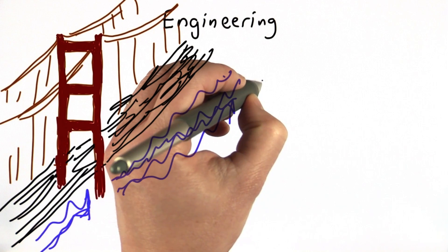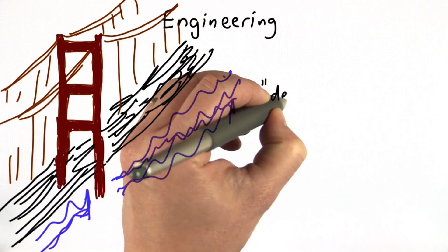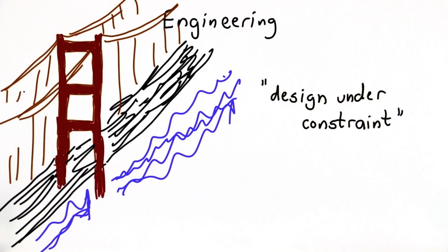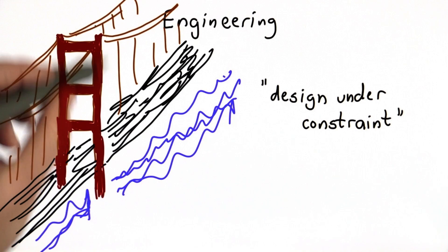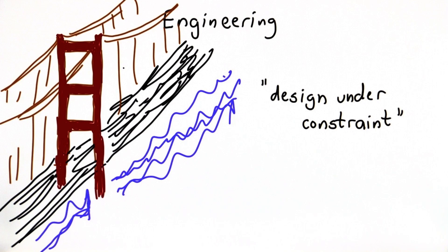A broader view of engineering views it as design under constraint. When you're building a bridge, the constraints are the laws of physics. You need the bridge to stand up, but you want to limit the cost of the bridge, the amount of material that you use. You want it to not sway too much in the wind. These are all the kinds of constraints that you have to think about in designing a bridge.